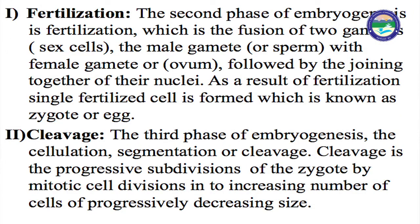Fertilization: the second phase of embryogenesis is fertilization, which is the fusion of two gametes — sex cells — the male gametes or sperm with female gametes, ova, followed by the joining together of their nuclei. As a result of fertilization, a single fertilized cell is formed, which is known as a zygote or egg.